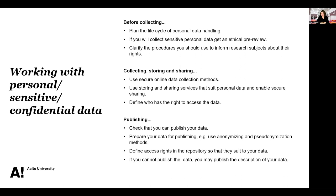While collecting, storing, and sharing your data, use secure online data collection methods. Use storing and sharing services that suit personal data and enable secure sharing. Define who has access to the data. If you're working with other institutions, are you allowed to share the data with them? Do you have consent from participants? If you're planning on publishing the data, check that you're allowed to do that. When preparing data for publishing, if you have personal data, you might need to anonymize or pseudonymize it. Pseudonymization means direct identifiers may be removed but it is still possible to track back some data to an individual. Anonymization means there is no way to trace the data back to the individual — and that is really difficult to do, so be careful when you promise something will be anonymized.